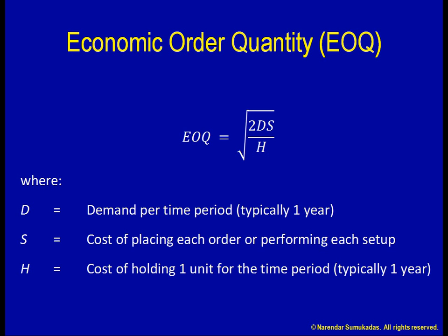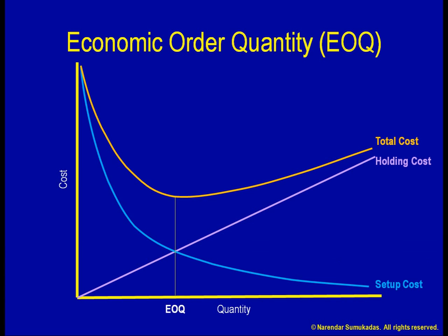The EOQ mathematical model is based on several assumptions, including a steady demand, unlimited purchasing or production quantities, etc. Many of these assumptions are likely to be invalidated in a real-life situation. However, the EOQ model is pretty robust in that regard. Even if our assumptions are invalidated and the quantity indicated by the EOQ model is not really the optimal quantity, we are still okay. Given that the bottom portion of the total cost curve is somewhat flat, even a wide range of incorrect EOQ values will result in a pretty low total cost.